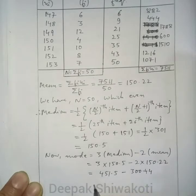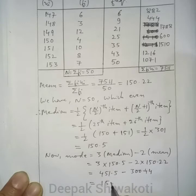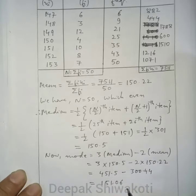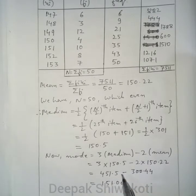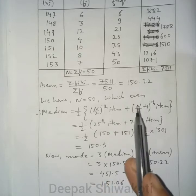Calculating this, we get the mode of the data. So we have obtained mean = 150.22, median = 150.5, and mode using the empirical formula.